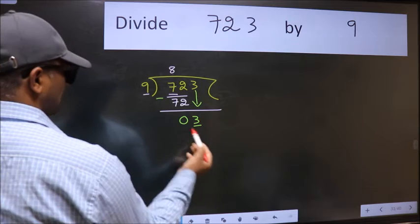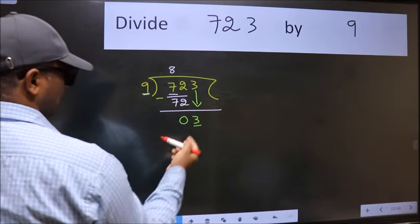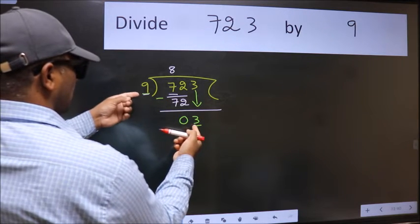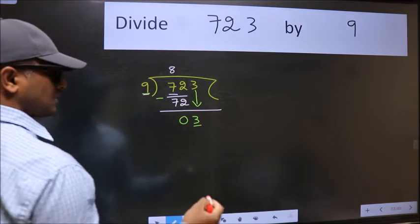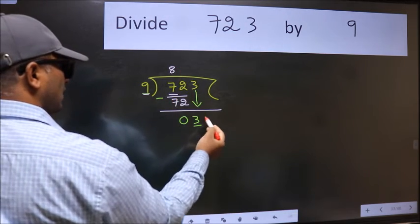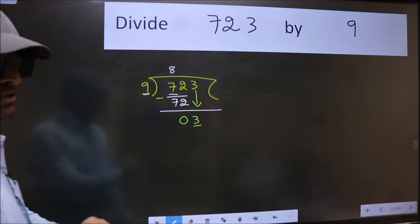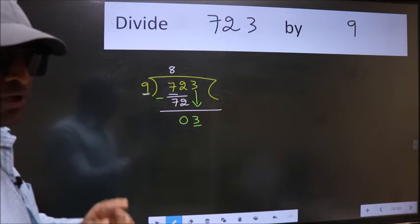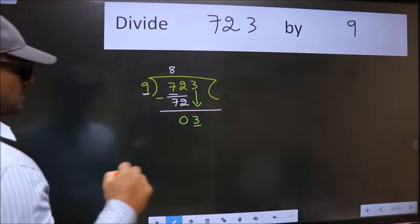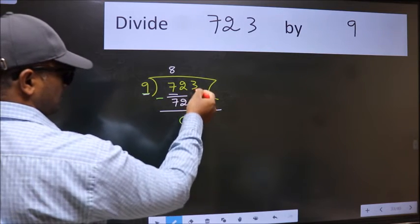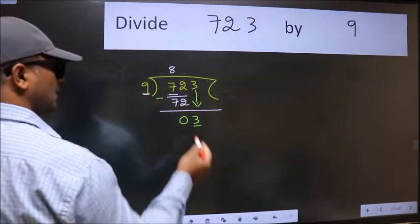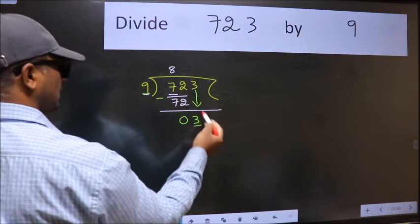Here we have 3, and here 9. 3 is smaller than 9. So what many do is, they directly put dot take 0. Which is wrong. Why is it wrong? Because just now you brought this number down, and in the same step, you want to put dot take 0.